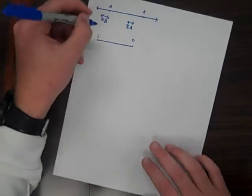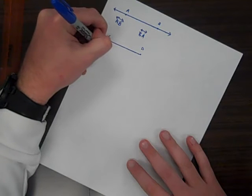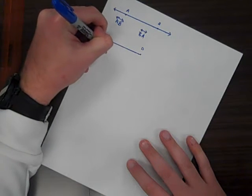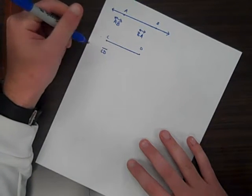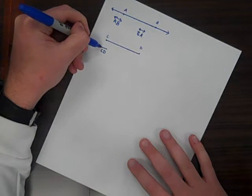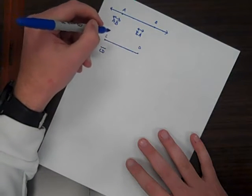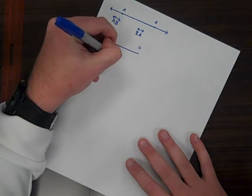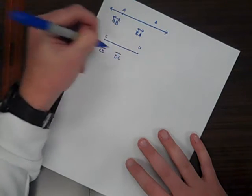Similar to lines, when naming line segments, they can be named two different ways. Line segment CD, notice I don't have the arrows on the line segment. Just like with the line, we can then flip it to line segment DC.